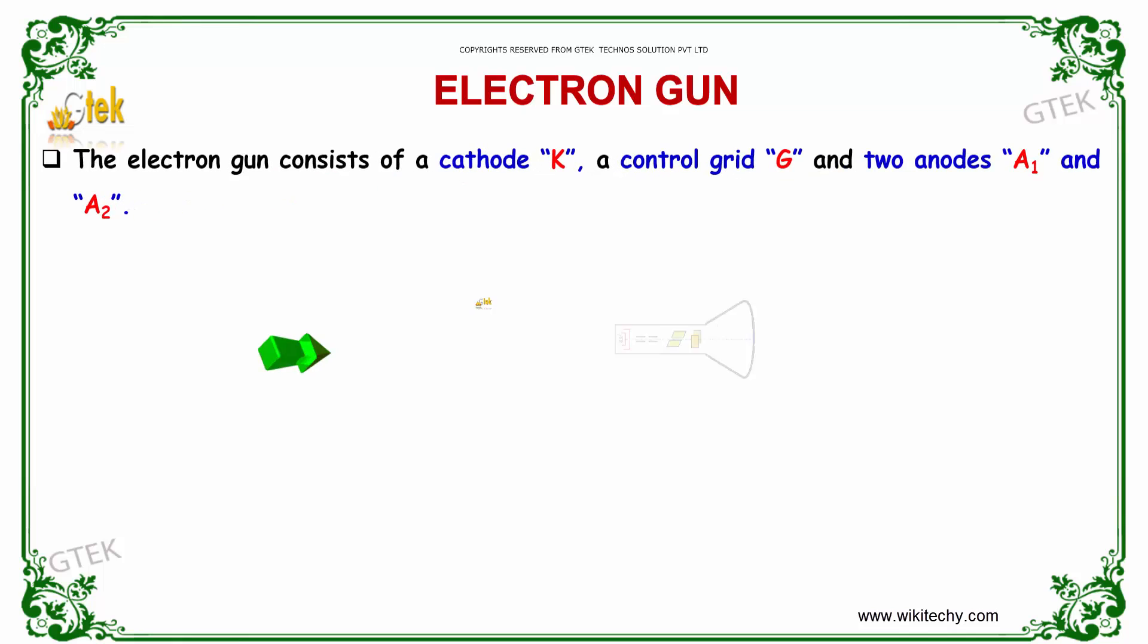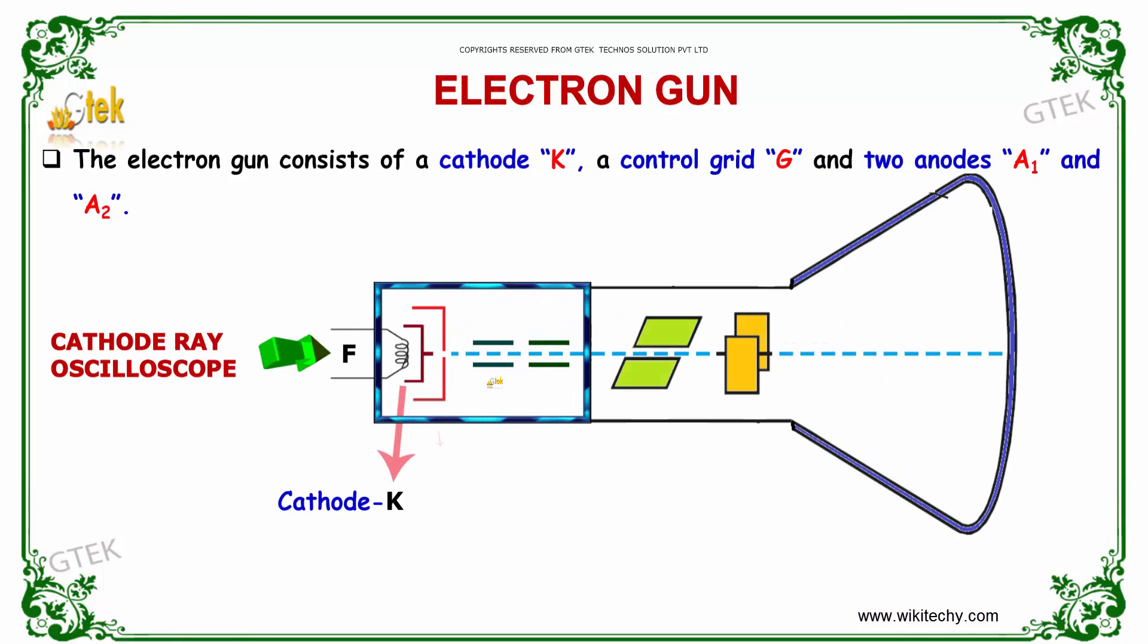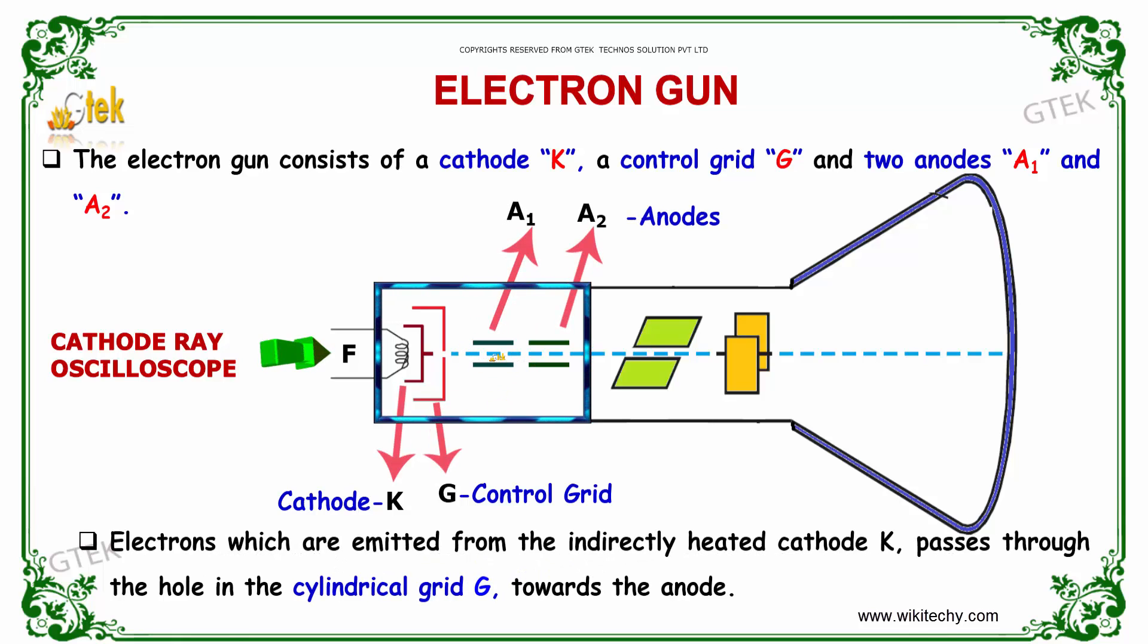Let's first discuss about electron gun. The electron gun consists of a cathode which has been represented as K. And a control grid, so this one is the control grid. And it has two anodes, that have been mentioned as A1 and A2. So the electrons which are emitted from the indirectly heating mechanism of cathode K passes through the hole in the cylindrical grid towards the anode.